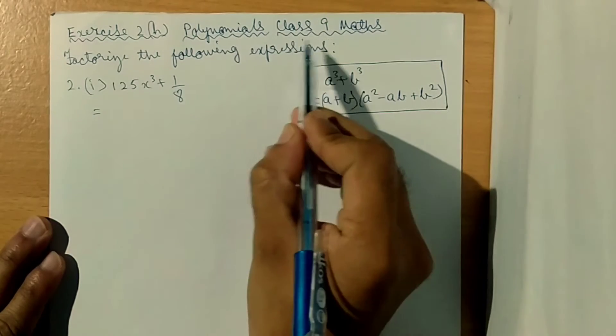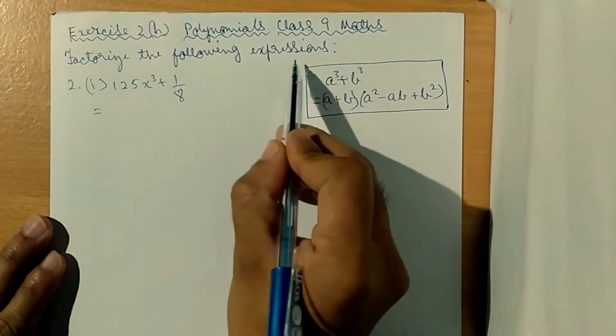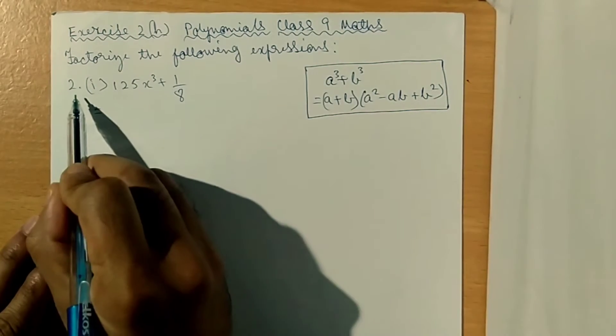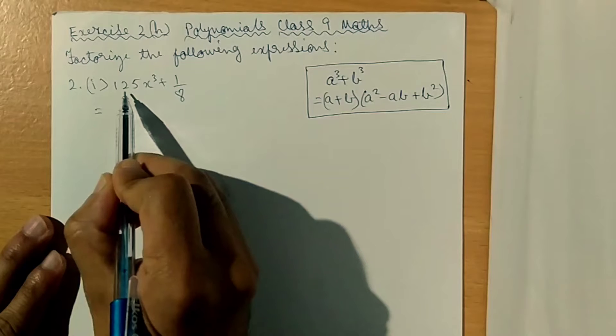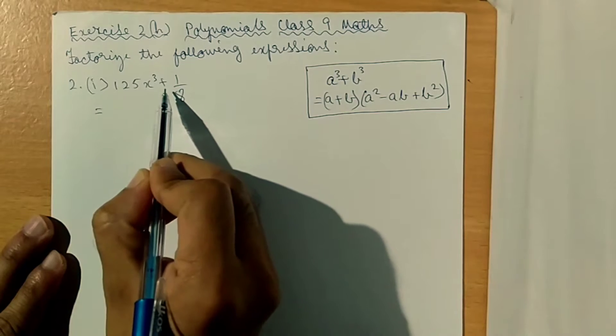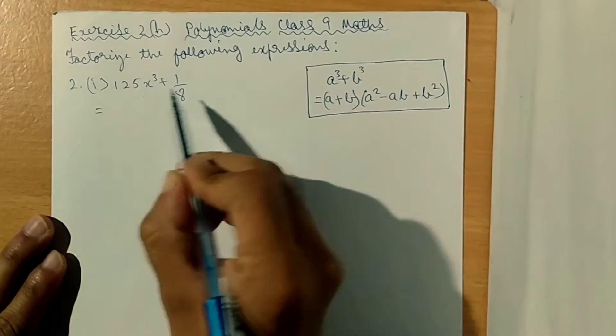Exercise 2(H) Polynomials, Class 9 Maths. Factorize the following expressions, question number 2, sub number 1: 125x cube plus 1 by 8.